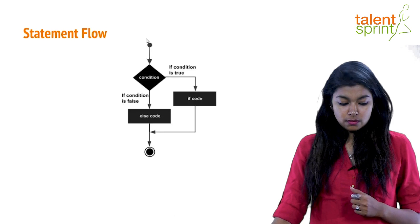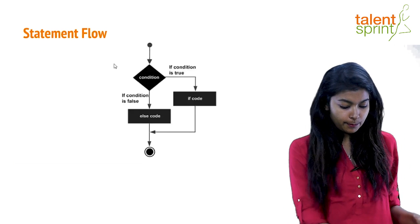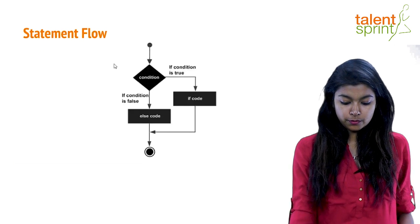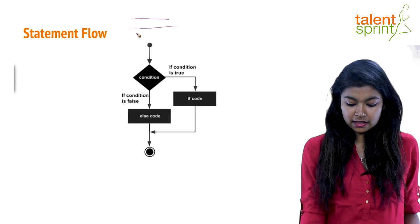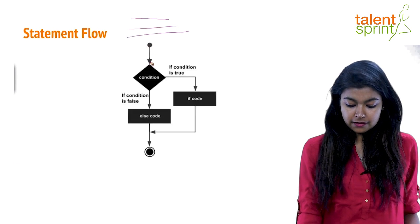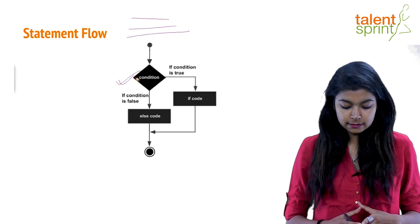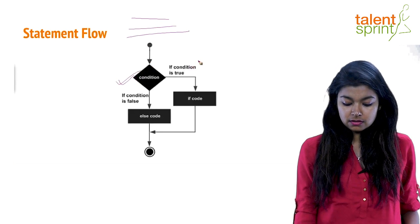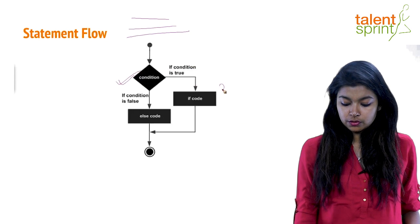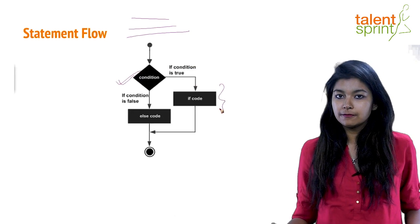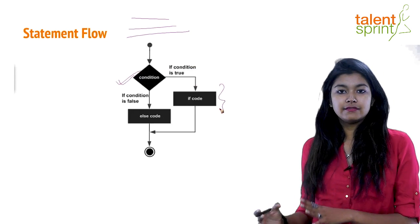Let's say your program proceeds from the top. Your program has a few statements here above, and after that you check this particular condition for any condition that you want to test. Now if the condition is true you move on to the if code, execute the if code and the else code is left untouched.